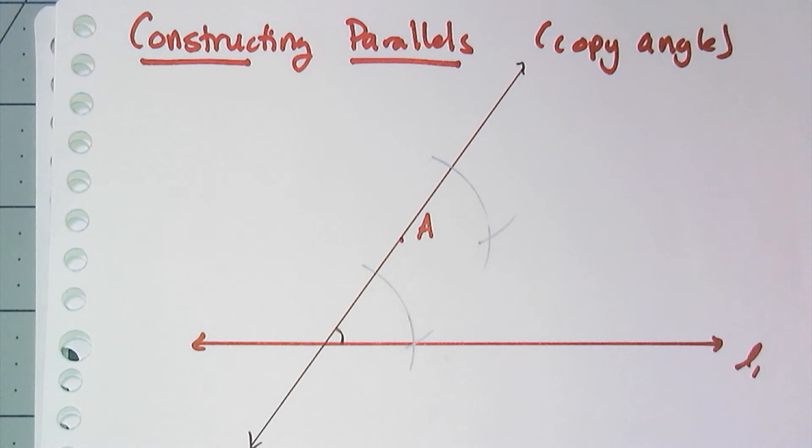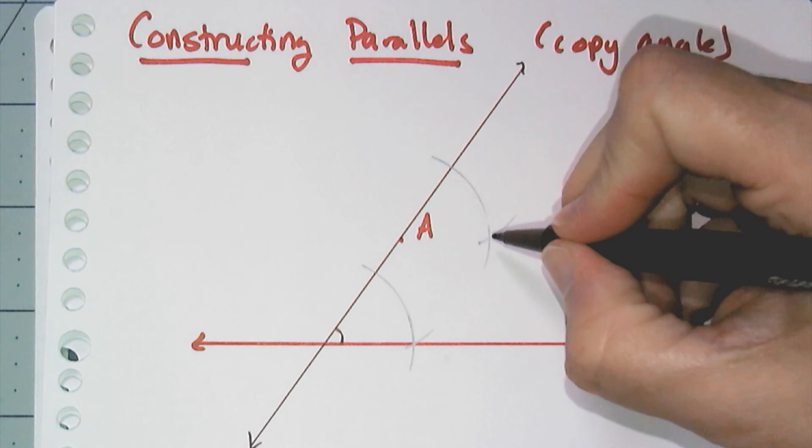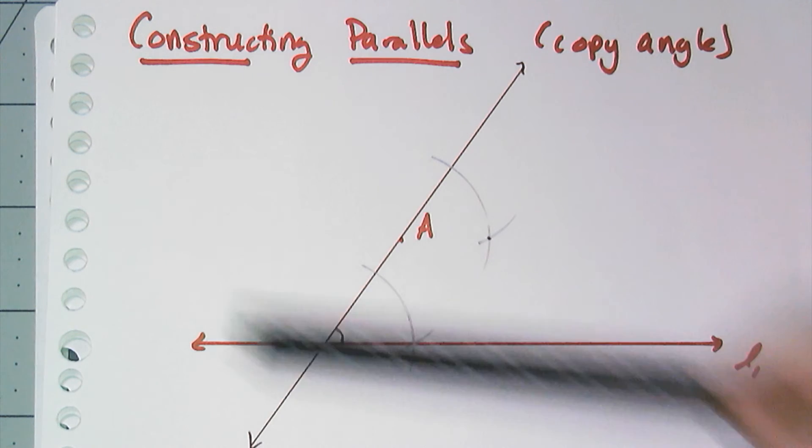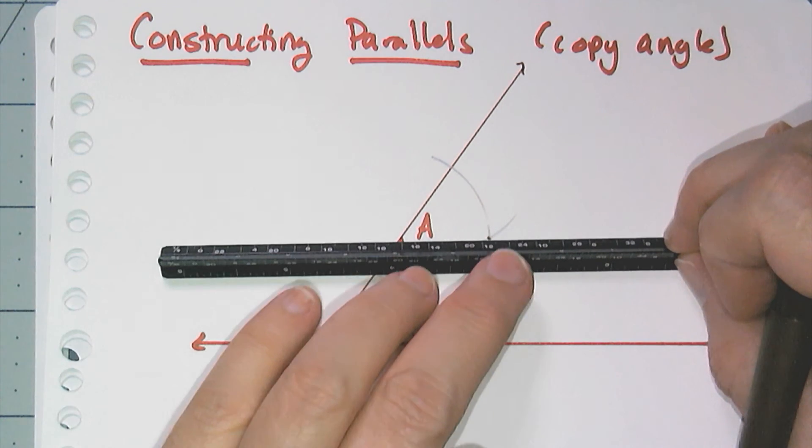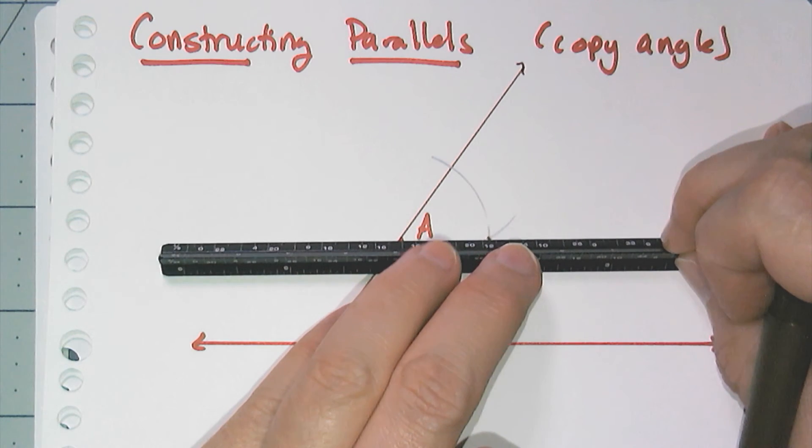And then, oh, look, I have a second point. I of course need two points to draw a line. And when I draw that line in, I will have my parallel.